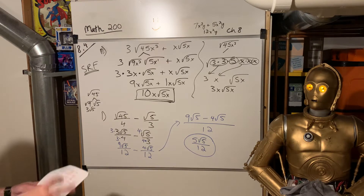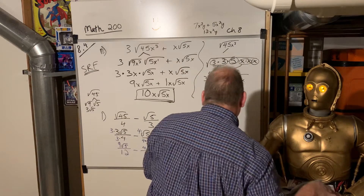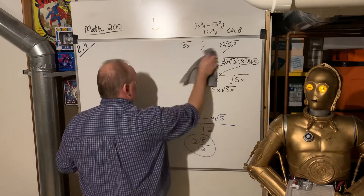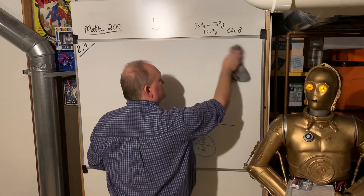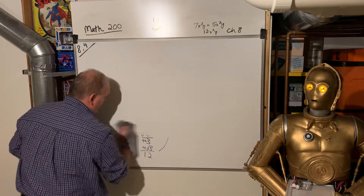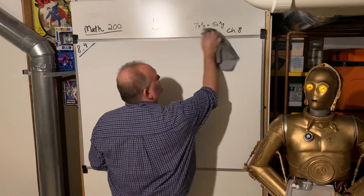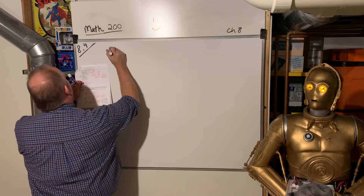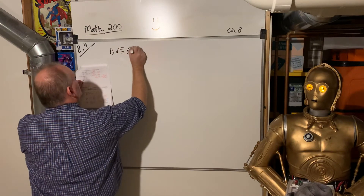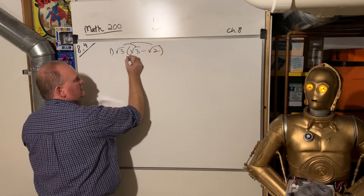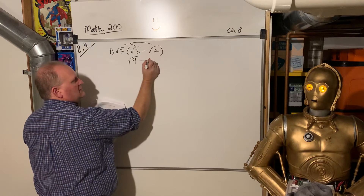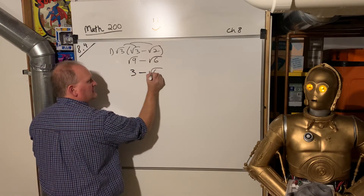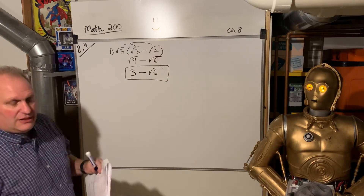How about when we're multiplying? Remember, you can multiply radicals as long as they have the same index. So square root times square root — you can multiply the numbers inside. Then see if you can simplify. We've got the square root of 3 times the quantity (square root of 3 minus square root of 2). That gives us the square root of 9 minus the square root of 6. The square root of 9 is 3, so the answer is 3 minus the square root of 6. We're done — can't do anything else.